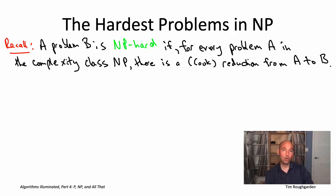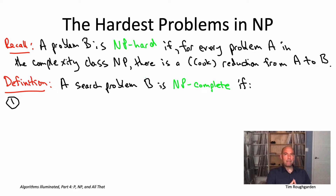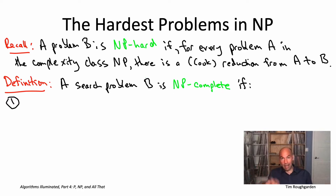We've been looking at Cook reductions throughout. A problem is NP-hard if given a polynomial time subroutine solving B, you'd automatically get polynomial time algorithms for all problems in class NP. To qualify as NP-complete, problem B has to satisfy some additional properties. First, only search problems are eligible to be NP-complete. So while the TSP in its optimization version is NP-hard, it's not NP-complete. The search version of the TSP will, in fact, be an NP-complete problem.